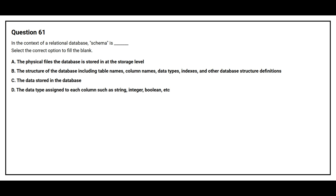In the context of a relational database schema, blank space is defined as: Option A, the physical files the database is stored in at the storage level. Option B, the structure of the database including table names, column names, data types, indexes, and other database structure definitions. Option C, the data stored in the database. Option D, the data type assigned to each column such as string, integer, boolean, etc. The correct answer is Option B: the structure of the database including table names, column names, data types, indexes, and other database structure definitions.